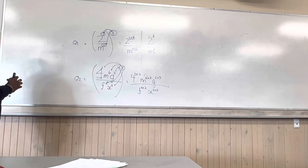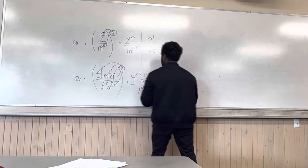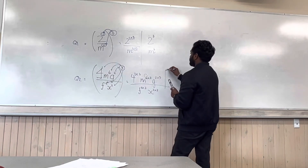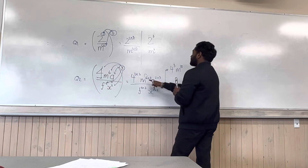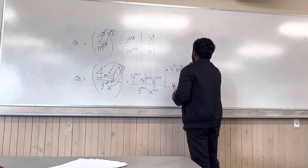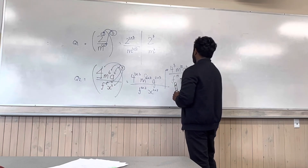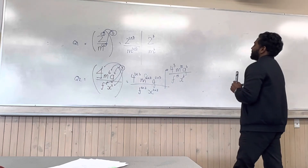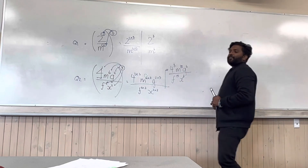We're not actually done there yet — that will get you one mark. Now you have to simplify it. Simplifying gives you four to the power of three, m to the power of 18 (because six times three is 18), g to the power of six, divided by f to the power of 15, and x to the power of six. Could you then simplify four to the power of three as a number?